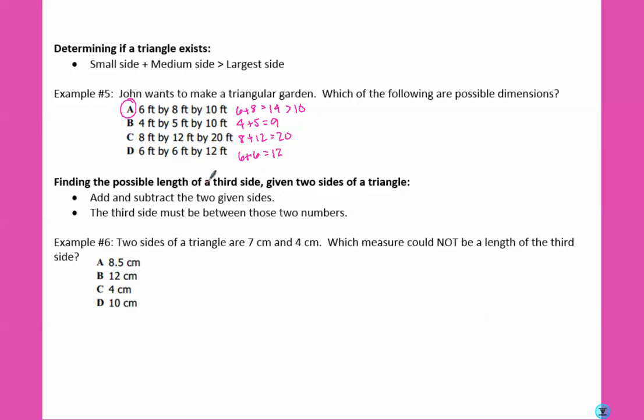What if they asked you to find the possible length of a third side given the two? You're going to add and subtract the two given sides, and the third side has to be between those. So example number six: two sides of a triangle are seven centimeters and four centimeters. Which measure could NOT be a length of the third side? So we're going to subtract them, and we get three. And we're going to add them, and we get eleven. So we know the missing side has to be in between three and eleven. So which one could not would be on the outside. So eight and a half, that's in between three and eleven, so that would work. Twelve, that's bigger than eleven, that won't work. Four is in between, and ten is in between. So the measure that would not work would be letter B.